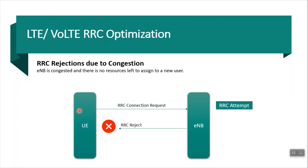Let us understand how we can improve this RRC rejection. If eNodeB is congested, then we have to reduce the congestion of the eNodeB. Let us understand how we can reduce the congestion.